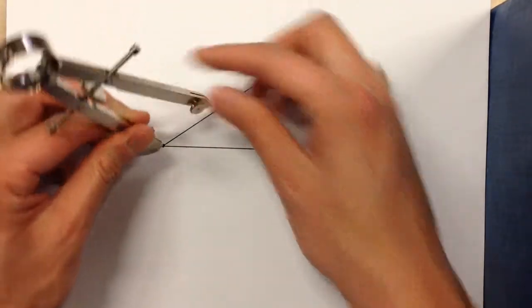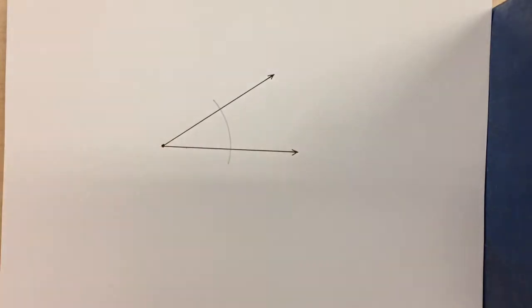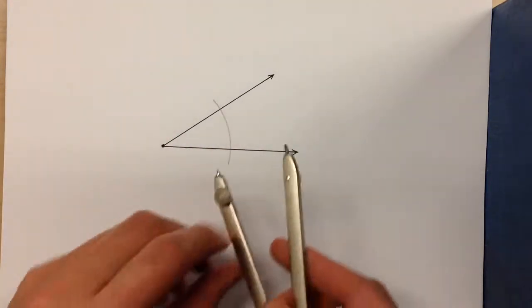So using that understanding, we first swing an arc, any arc, so that it hits both rays of your angle.